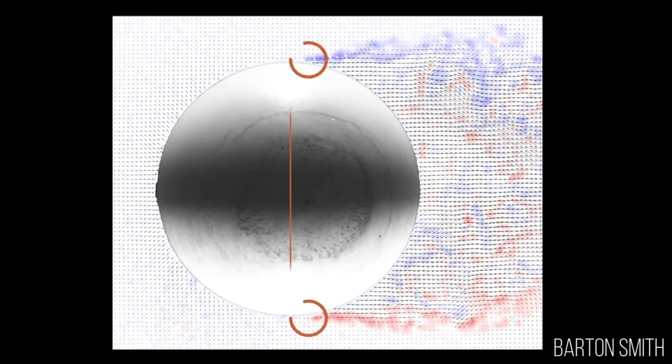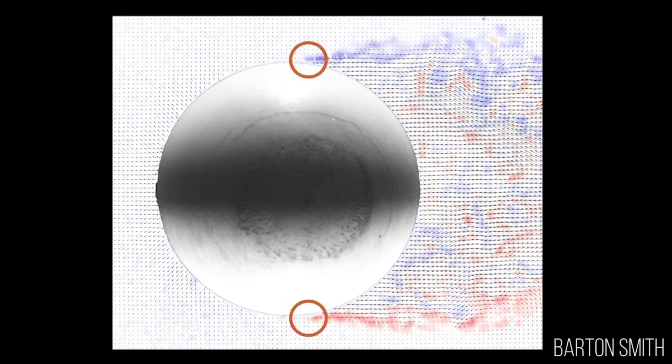Baseballs are smooth enough that at 90 miles an hour — the typical speed for a baseball — the boundary layer will stay laminar, meaning that it's steady and doesn't fluctuate in time.